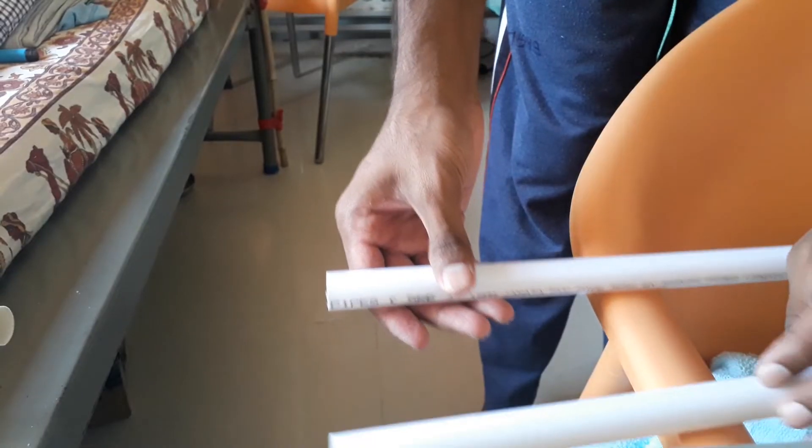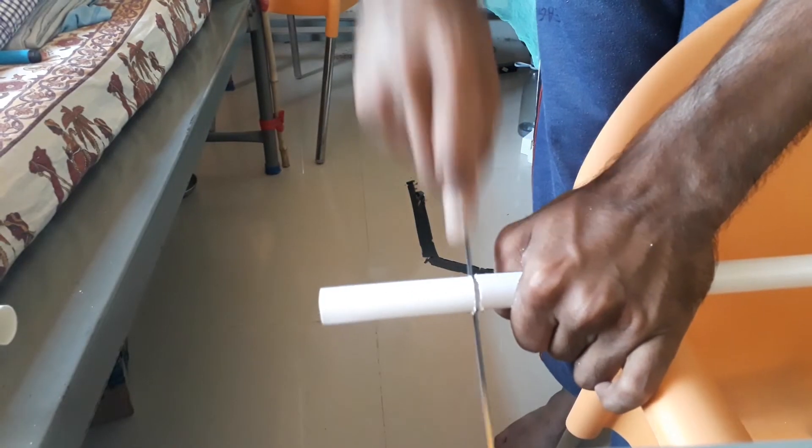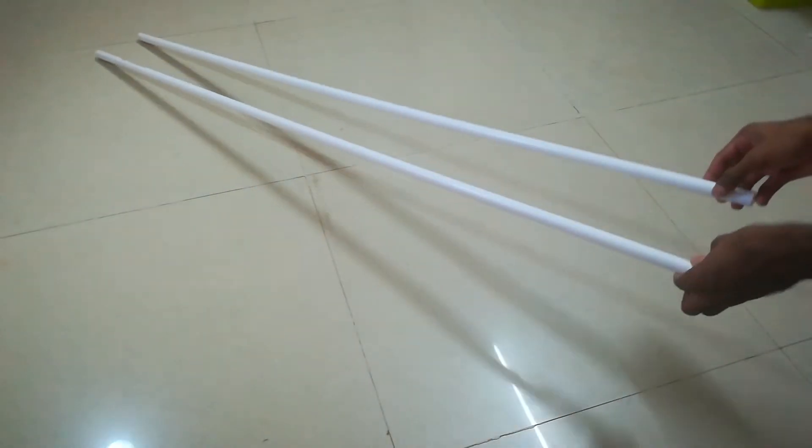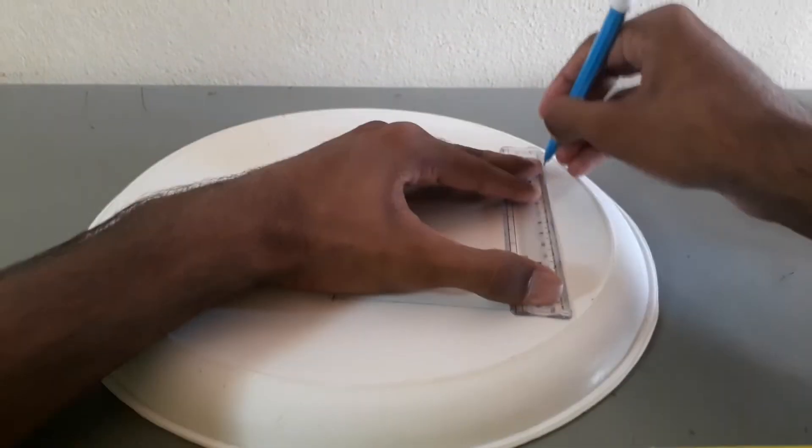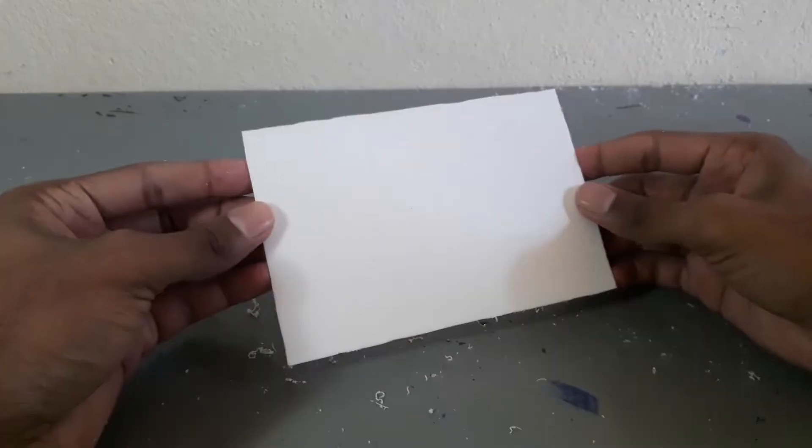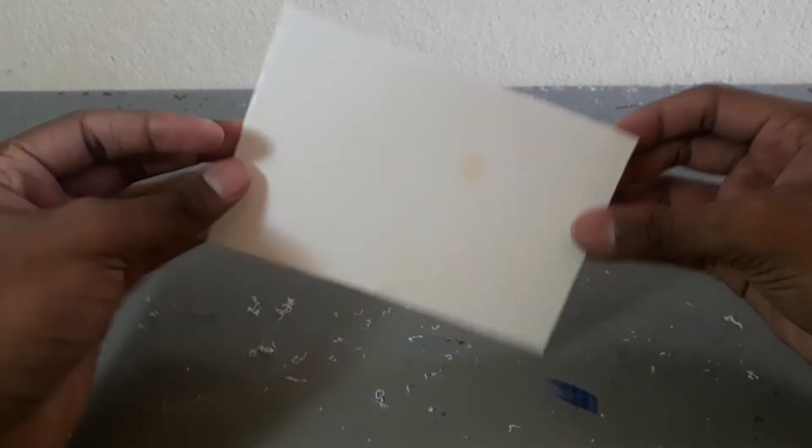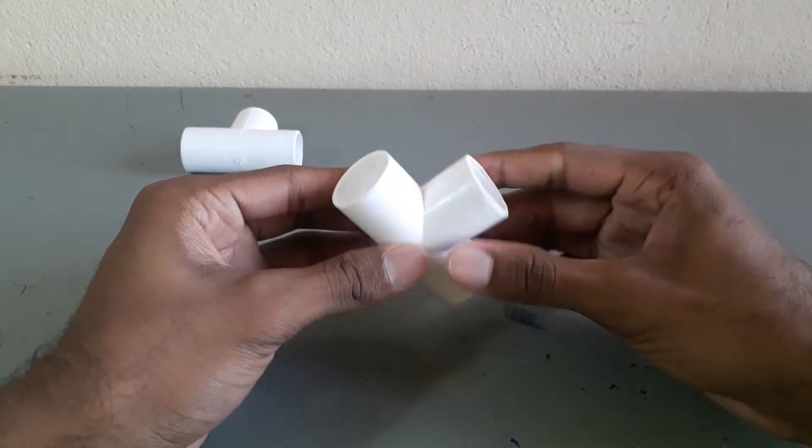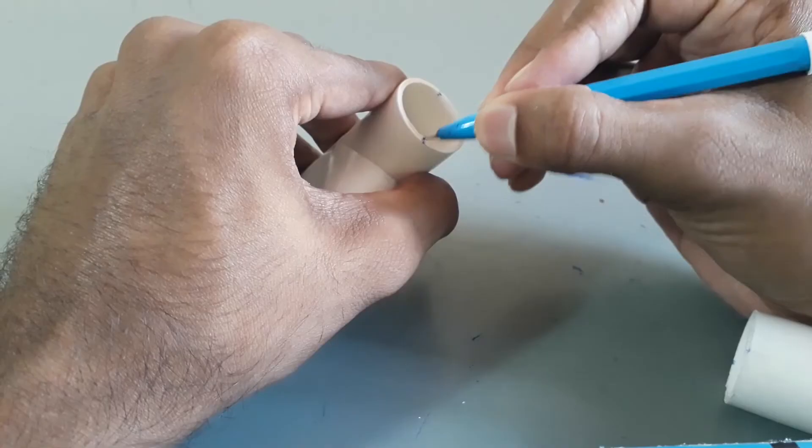First cut the 10 feet long conduit pipe in the middle and get two pipes each of 5 feet length. Then cut a piece of plastic in rectangular shape dimensions as shown on the screen. Then take T joints and split them in two.